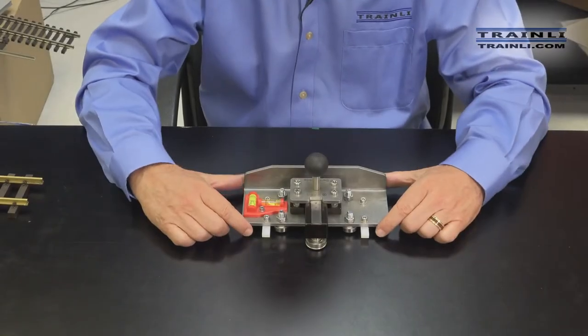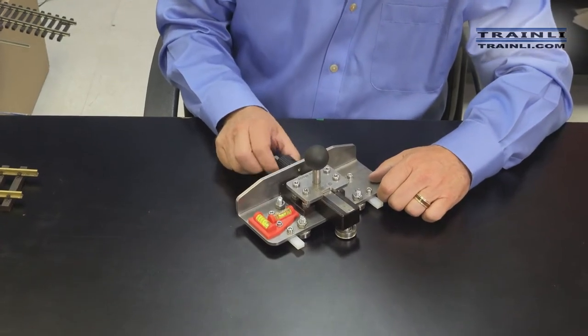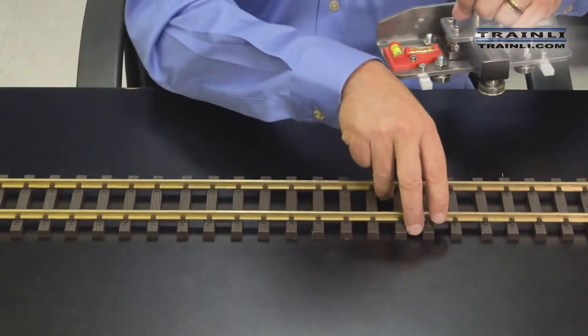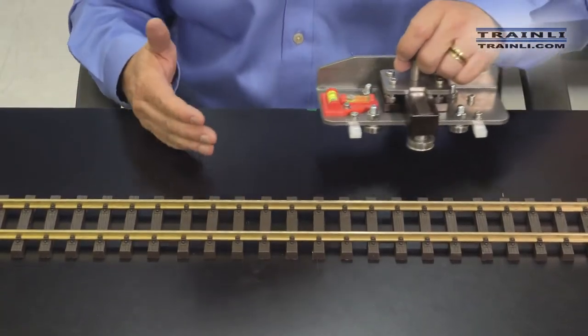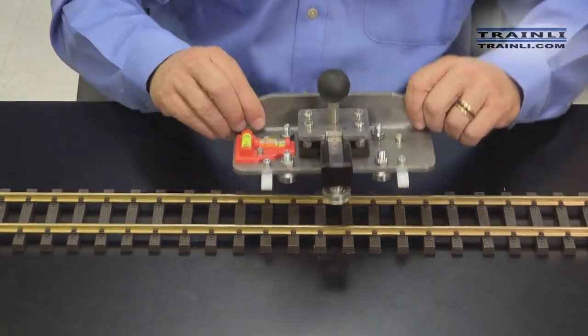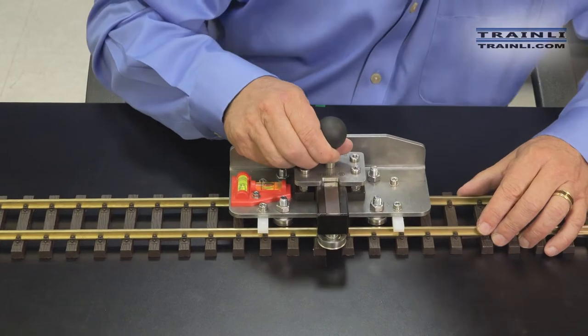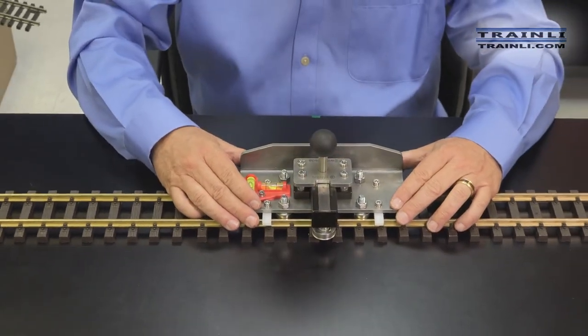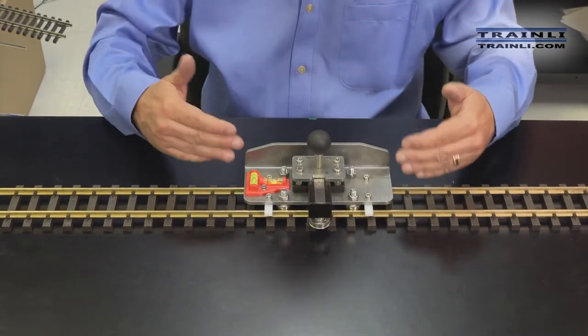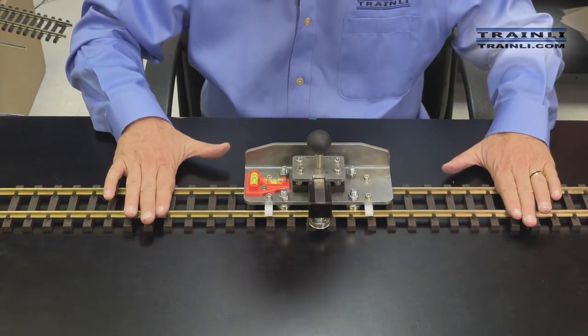Now we're going to show you how easy this is to use and to bend your rail. You want to make sure that it's pretty much opened all the way. And we're just going to bring in a piece of our six-foot brass flex track. We've cut it down to about a two-foot section just to show you how easy this is to use. And the railbender just sits right on top of the rail like that. You want to make sure that the rollers are on either side of the rails and that your little Teflon bars are sitting nice and level on top of the rail.